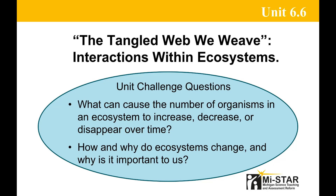In this unit, students confront the problem of invasive species by learning about various Michigan ecosystems, making predictions about how an invasive species may affect organisms and ecosystems within Michigan, and identifying appropriate management strategies for the invasive species. The unit challenge questions are: What can cause the number of organisms in an ecosystem to increase, decrease, or disappear over time? And: How and why do ecosystems change, and why is it important to us?